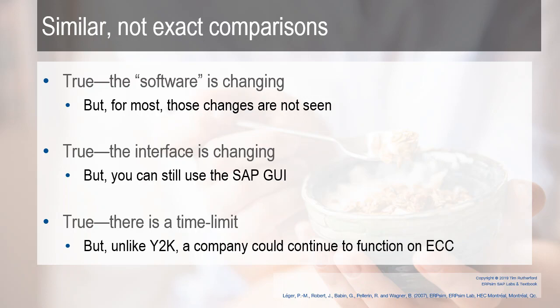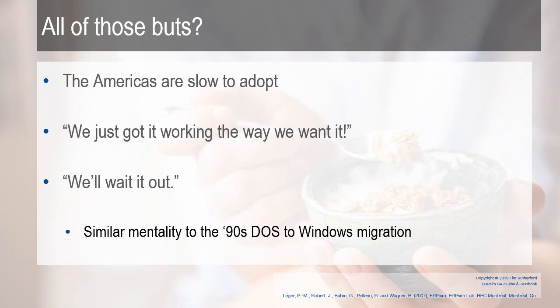These comparisons are similar to the ECC-to-S4 HANA migration but not exact. Yes, the software is changing — but for most end users those changes aren't seen right now. Yes, the interface is changing — but you can still use the SAP GUI; it's still available. And unlike Y2K, a company could continue to function on ECC past the deadline — you just lose SAP support. From what I've heard at ASUG meetings, the Americas are very slow to adopt S4 HANA. What I keep hearing is: 'We just got it working the way we want it — we'll wait it out.' That's the same mentality I saw in the 90s with DOS to Windows.